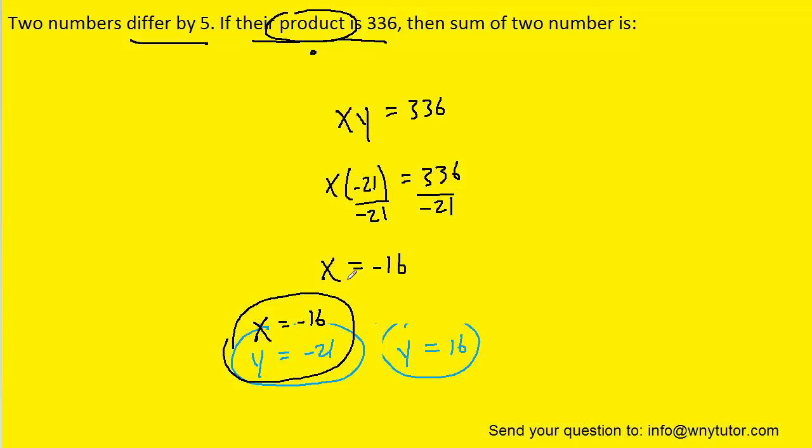But we can also plug positive 16 in for y back into this equation. So if we do that, and then divide both sides of the equation by 16, we can see that x would be equal to positive 21. And so we have a second set of answers.